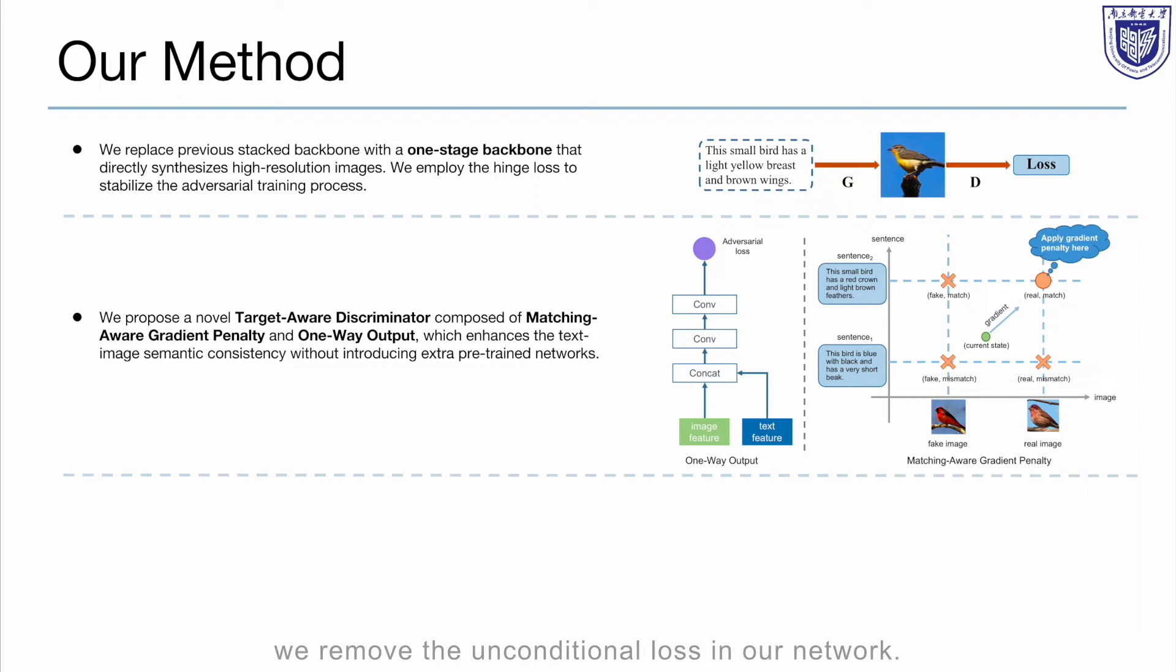Additionally, we remove the unconditional loss in our network, since the unconditional loss gives a gradient deviating from our target data. Therefore, we propose the one-way output for text-to-image synthesis.